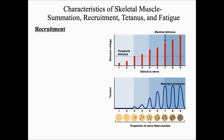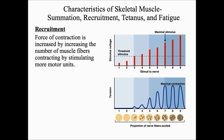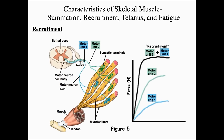The second way to increase the strength of a muscle contraction is by recruitment. During recruitment, the force of a contraction is increased by increasing the number of muscle fibers contracting — by stimulating more motor units. Graphically, when we increase the size of the stimulus, we recruit more motor neurons, which increases the strength of contraction. For example, motor unit one innervates two muscle fibers and motor unit two innervates three; stimulating both together produces a larger force of contraction.